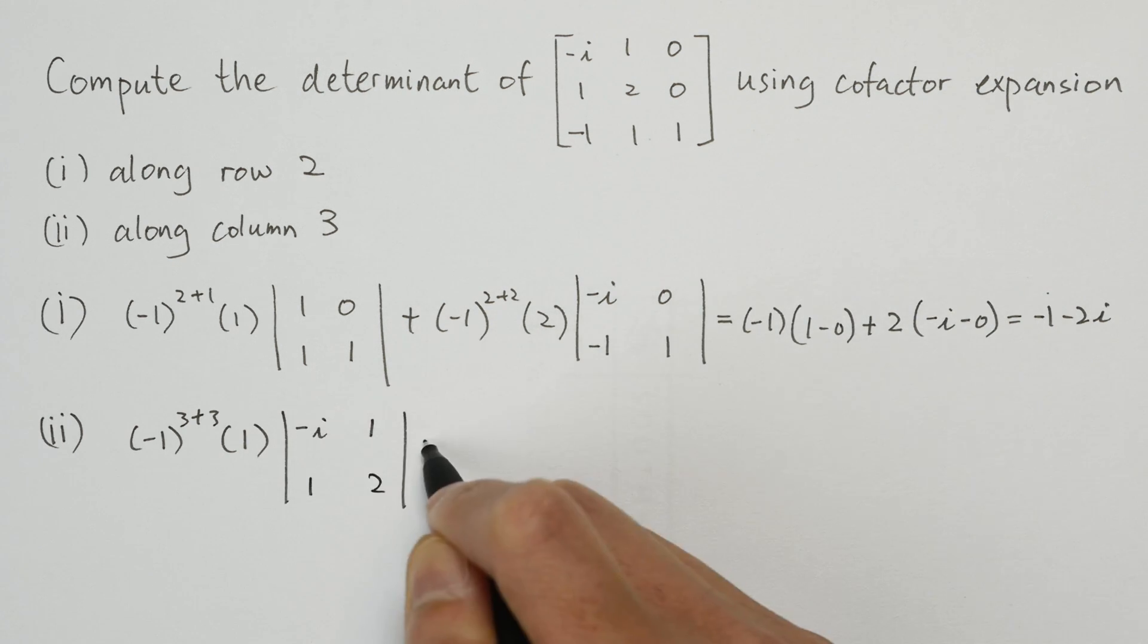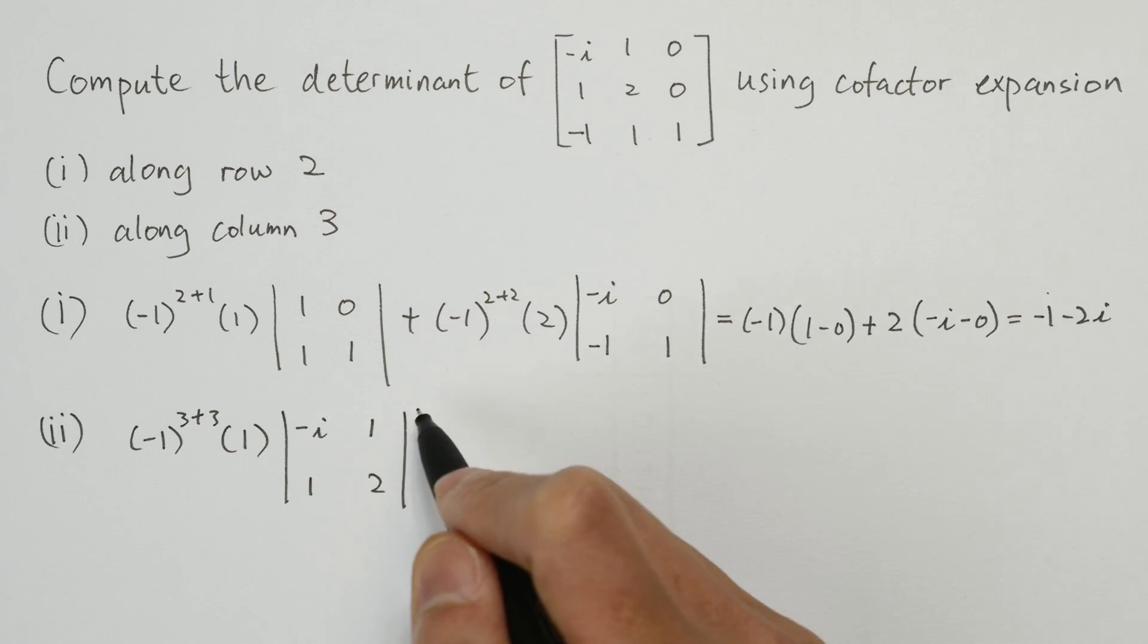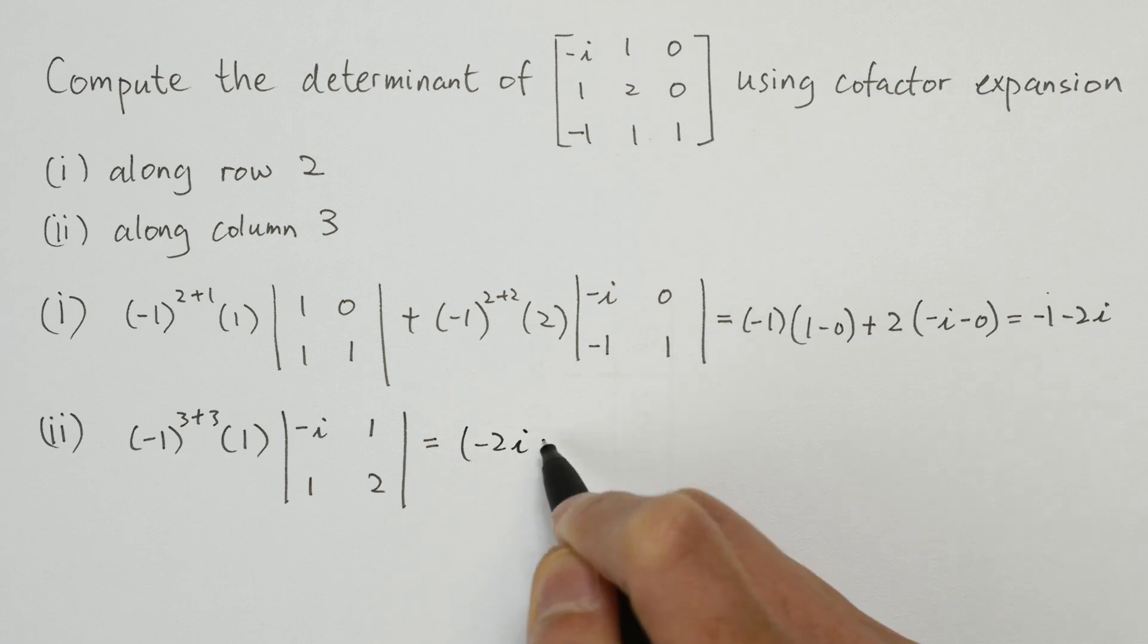And the result is simply the 2 by 2 determinant, which is minus i times 2 minus 1 times 1. And that's minus 2i minus 1.